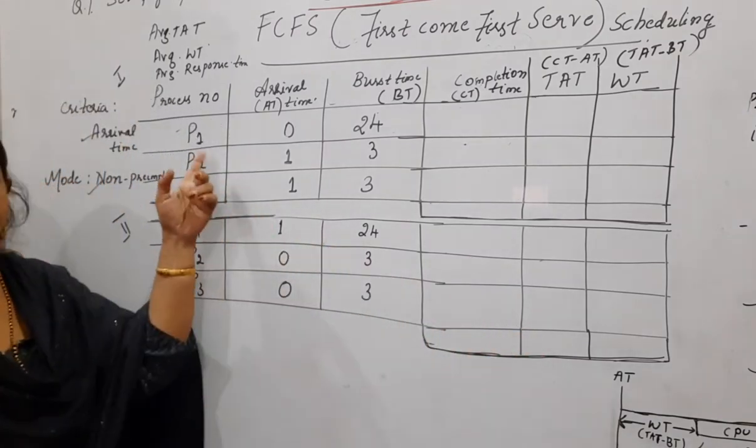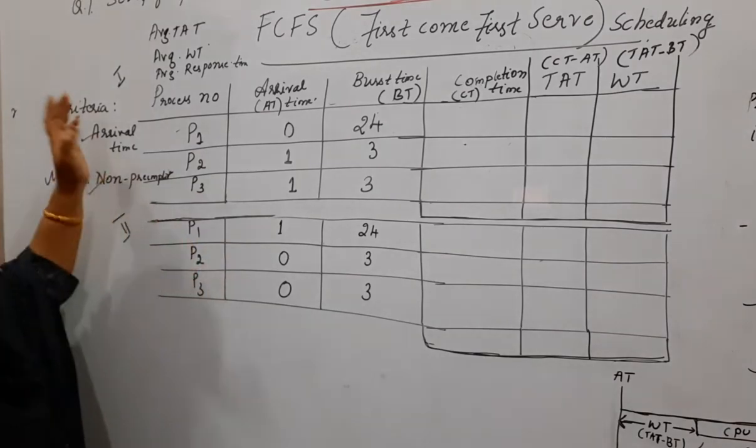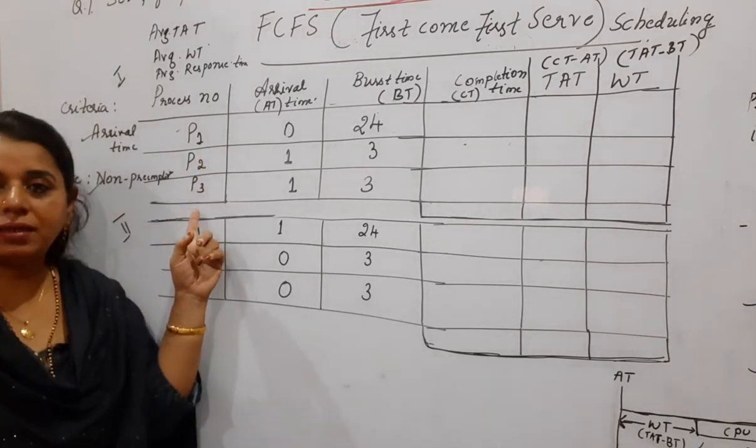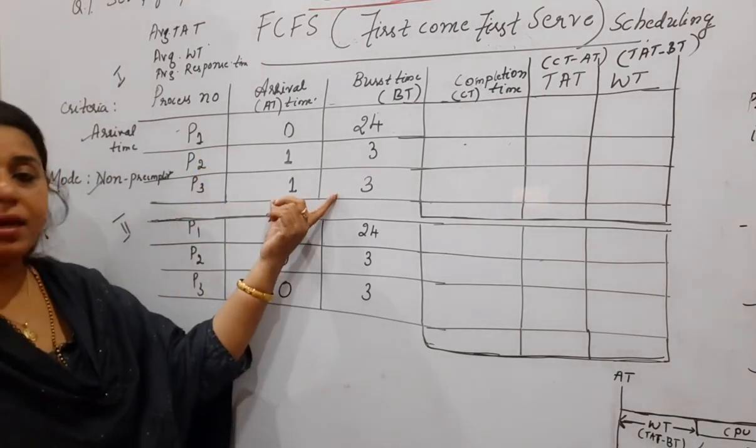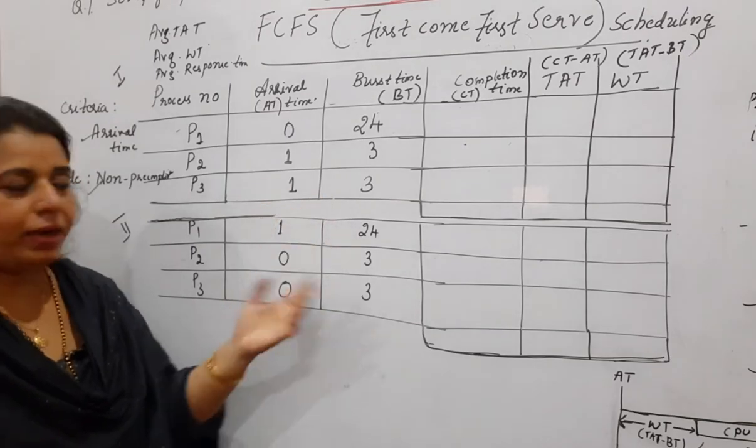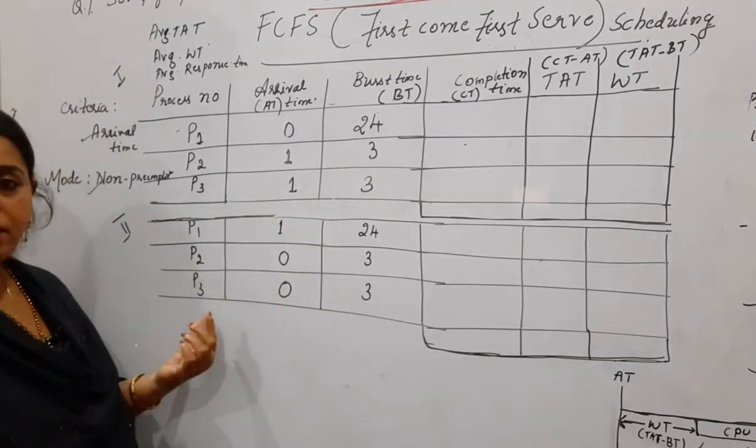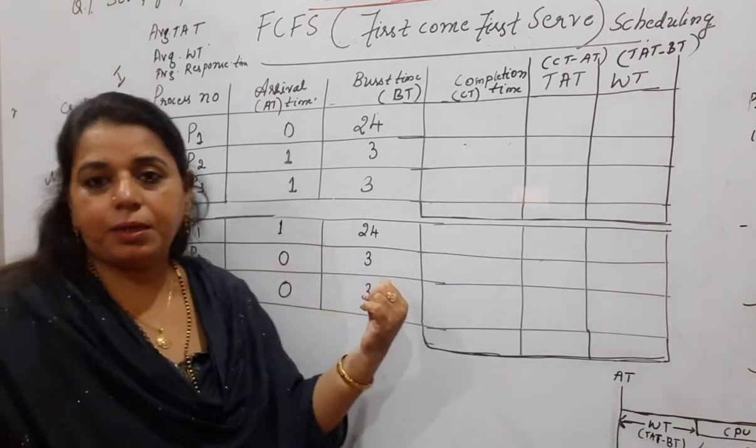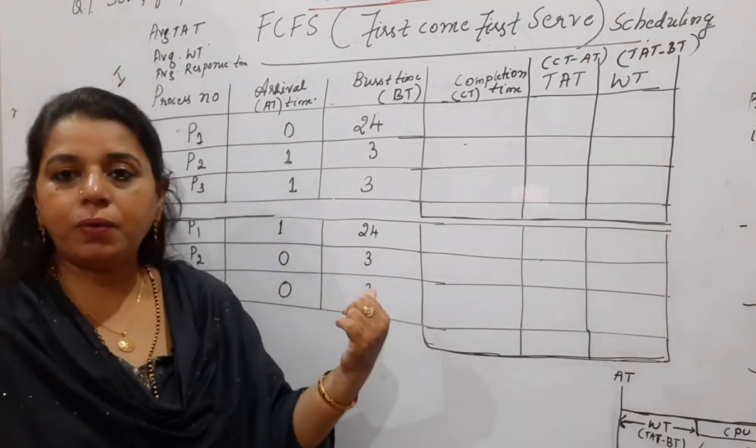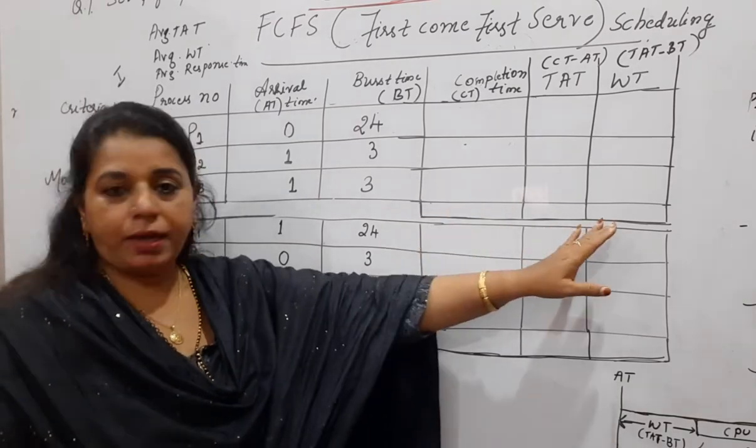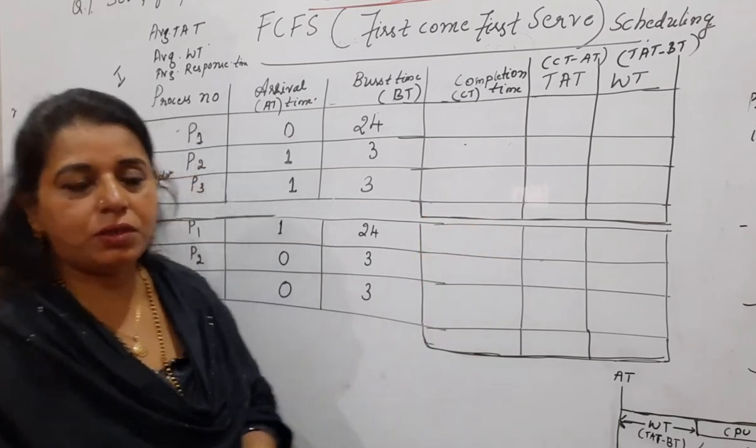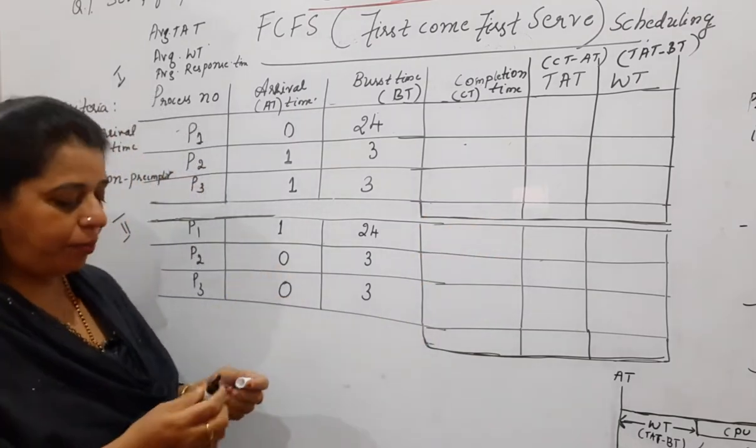Look here, what I have done in these two examples. Let me tell you first about the question. There are two different situations here. In the first situation, you can see three different processes with different arrival and burst times. Moreover, there is another situation with three processes given with arrival time and burst time. You are asked to find out the average waiting time in these two situations. So let us see now. First, we will solve the first situation and then come to the second problem.